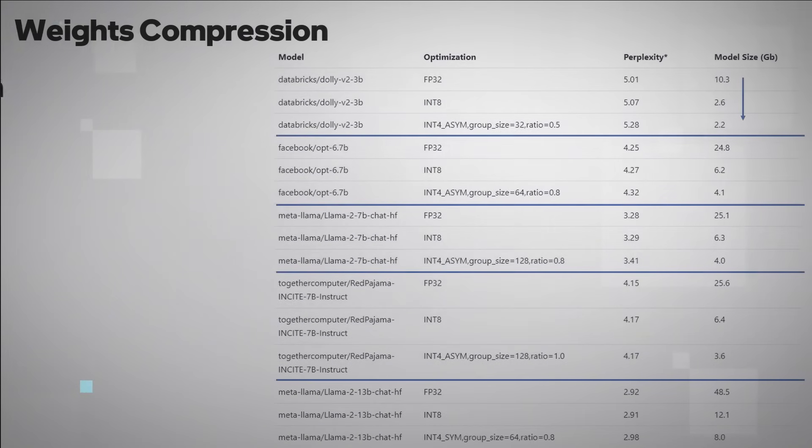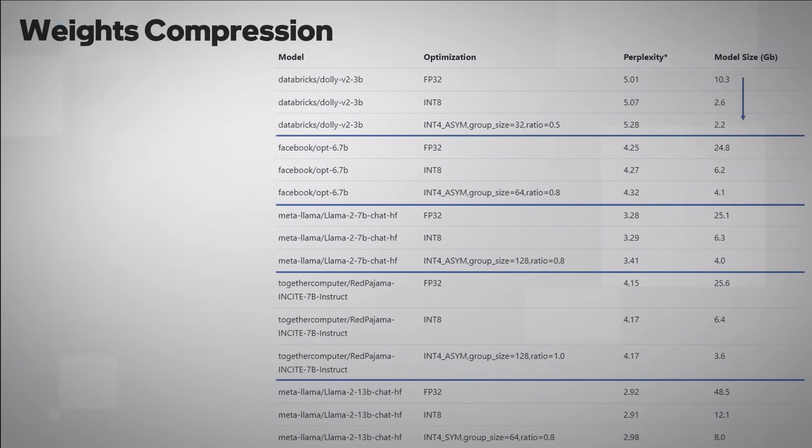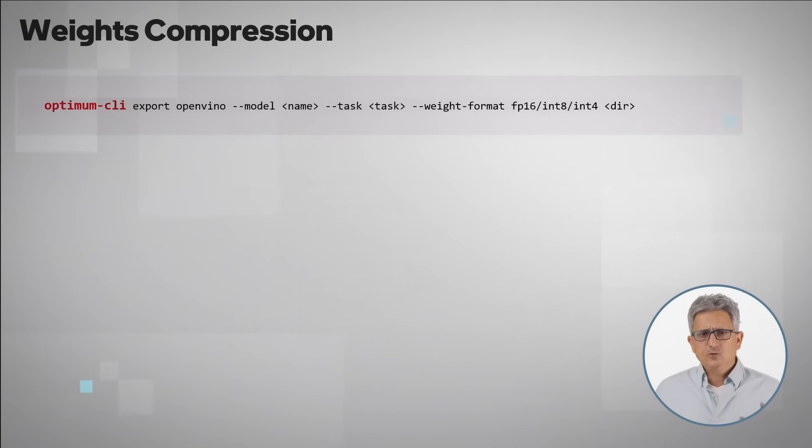Second is weights compression. The weights are usually larger than the activations, so compressing the weights makes a huge difference. You can see here examples of the size reduction of few models, link below. Please see my other video on weights compression. You can basically grab a model from Hugging Face and compress the weights in one line of Optimum CLI code.